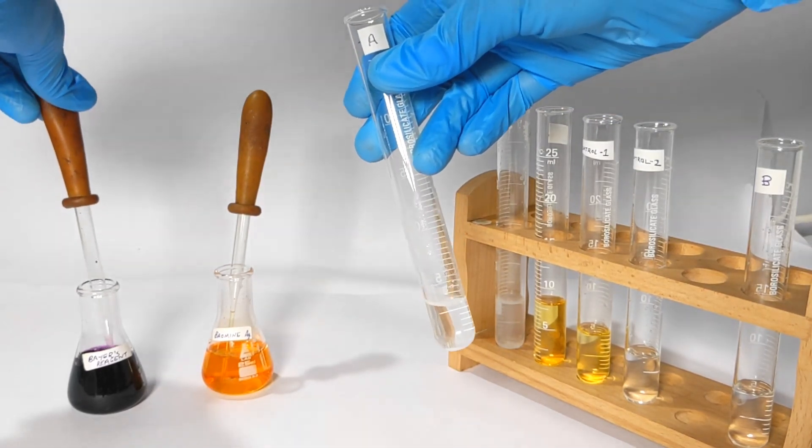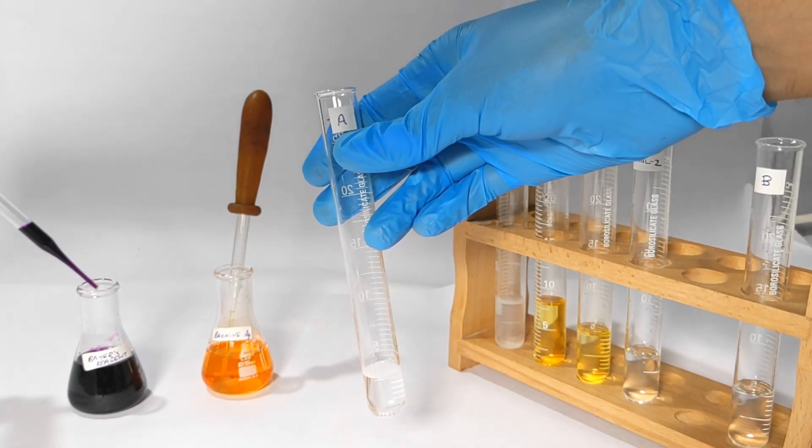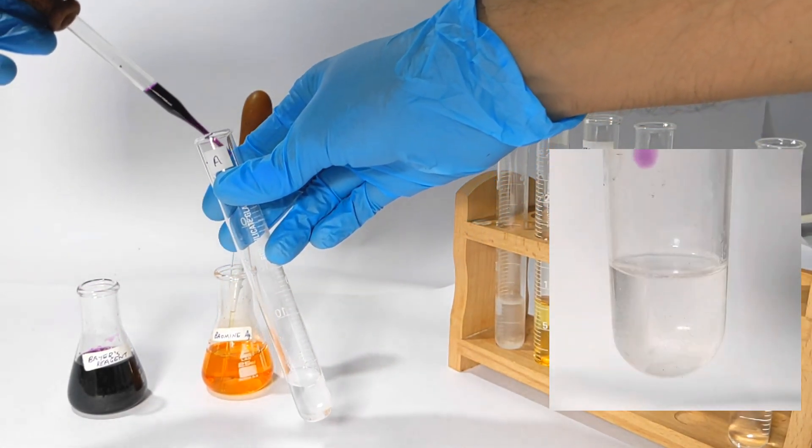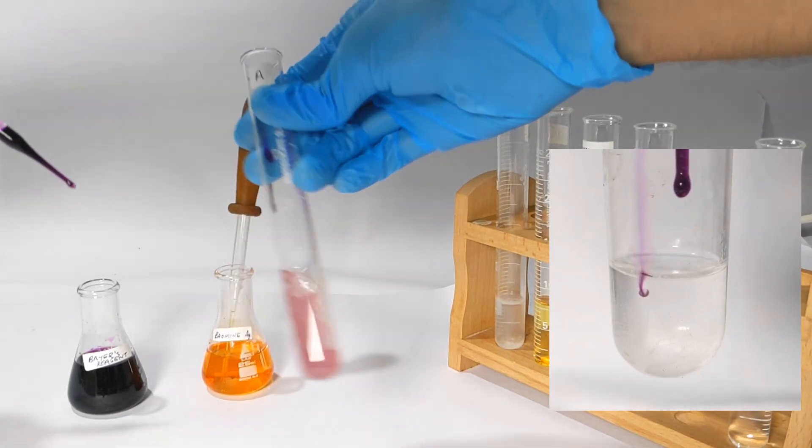Now similar to what we did in the first test, we will take some Bayer's reagent and add it to test tube A. You can immediately see the purple color of the Bayer's reagent is decolorized and the solution turns cloudy brown in color.